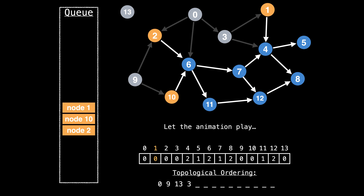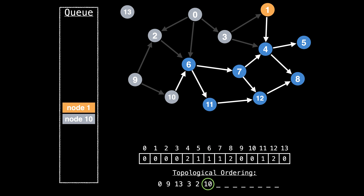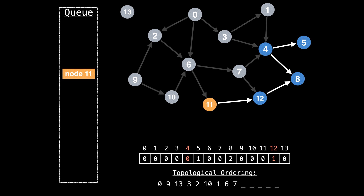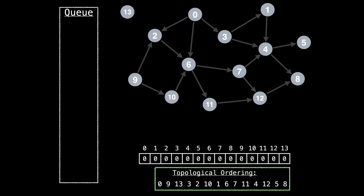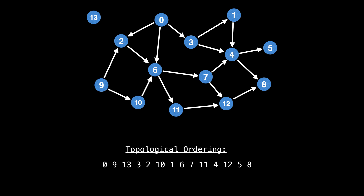I will let the animation play — try and follow along. And that's how you find the topological ordering of a graph with Kahn's algorithm. Let's have a look at the topological ordering we found and make sure that the ordering is valid. You can verify the ordering by going through the nodes from left to right and making sure no node you process has dependencies that are unaccounted for. The ordering is: zero, nine, 13, three, two, ten, one, six, seven, 11, four, 12, five, and eight.